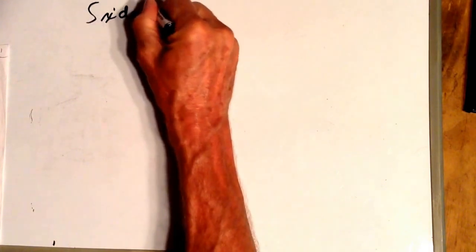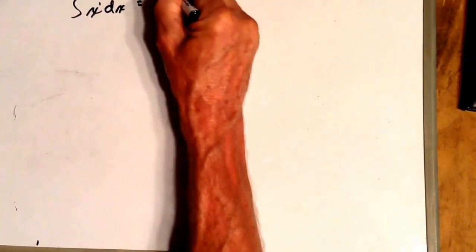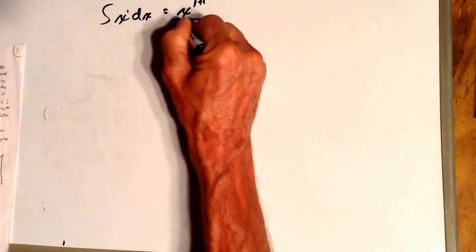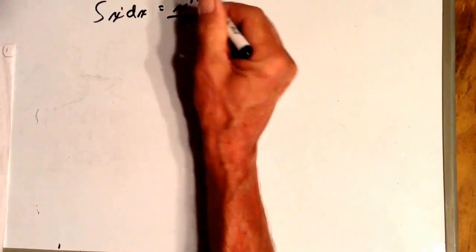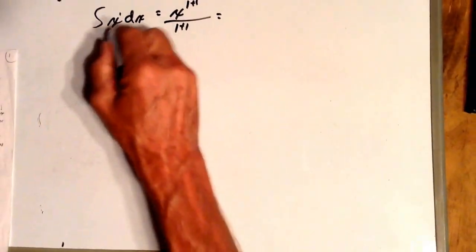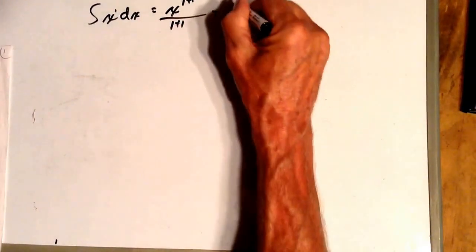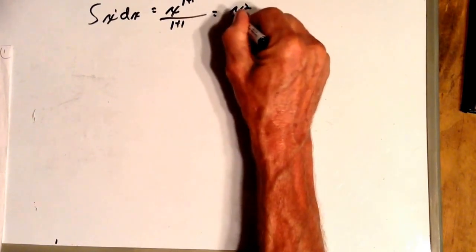So the integral of x dx is equal to x to the, carry that 1 over here, and add another 1 to it, and then we just grab all that and stick it under there. In other words, the integral of x dx is x squared over 2.